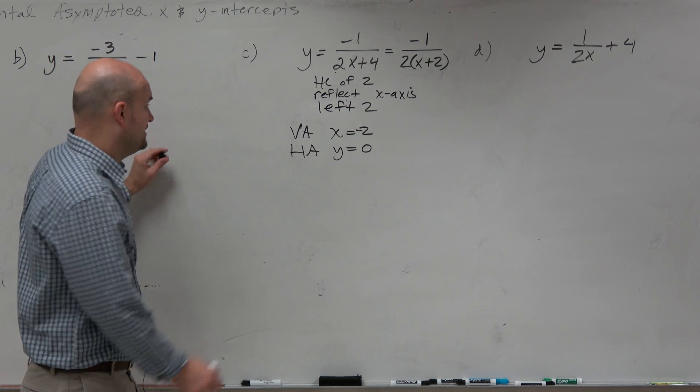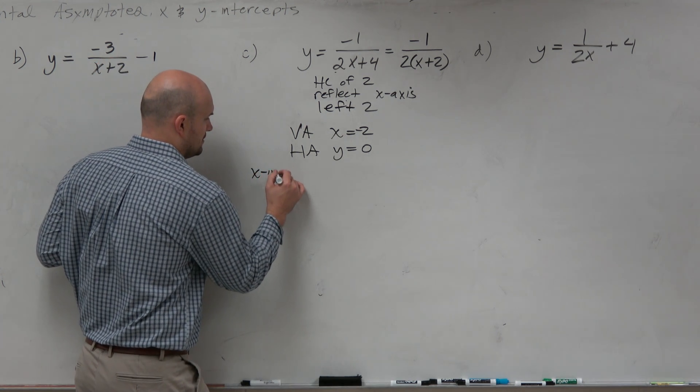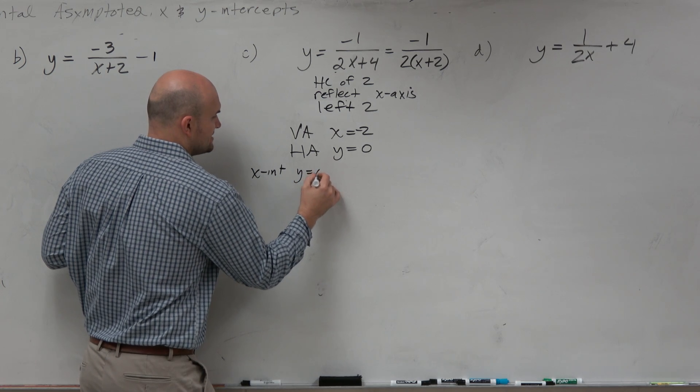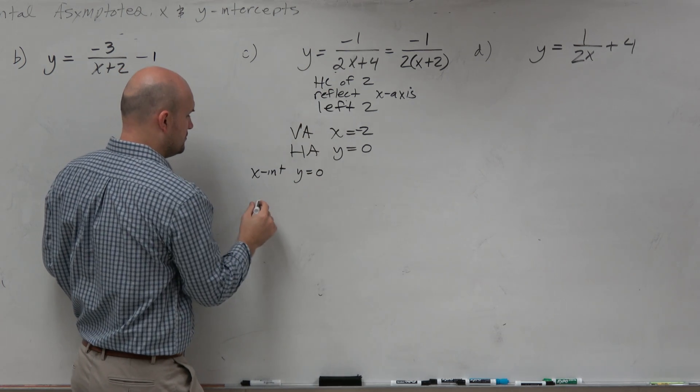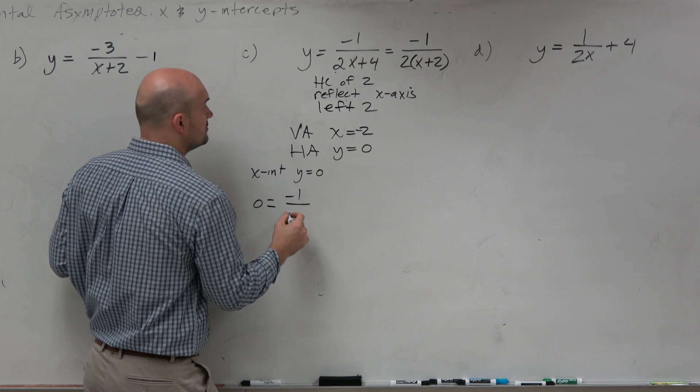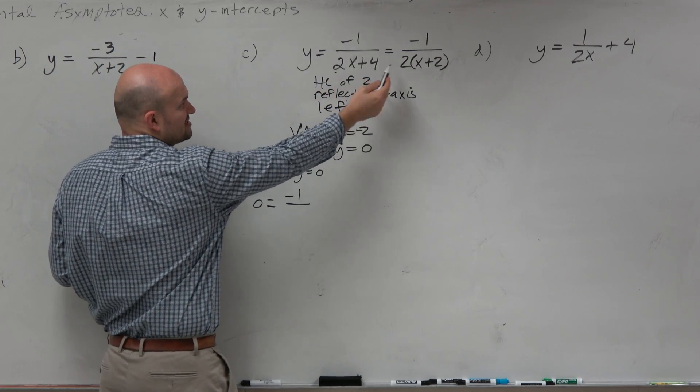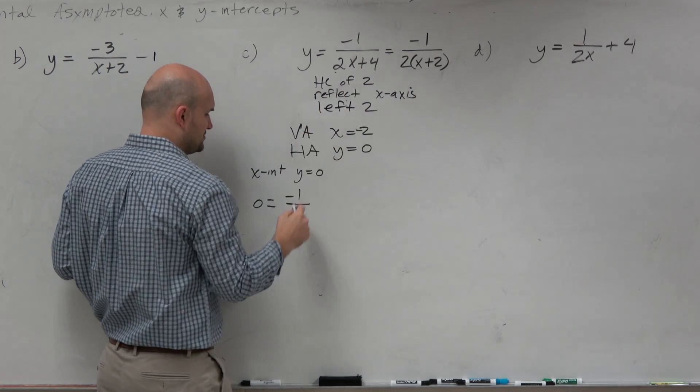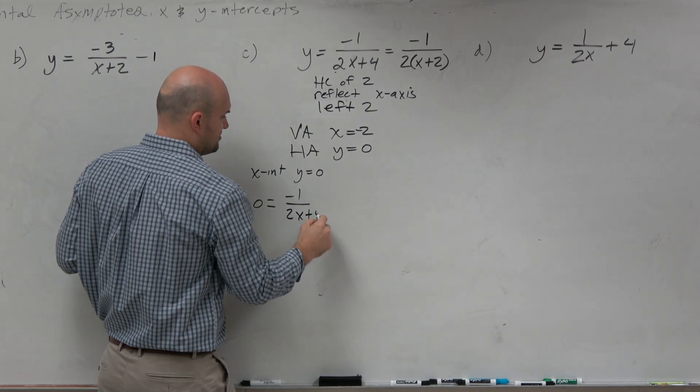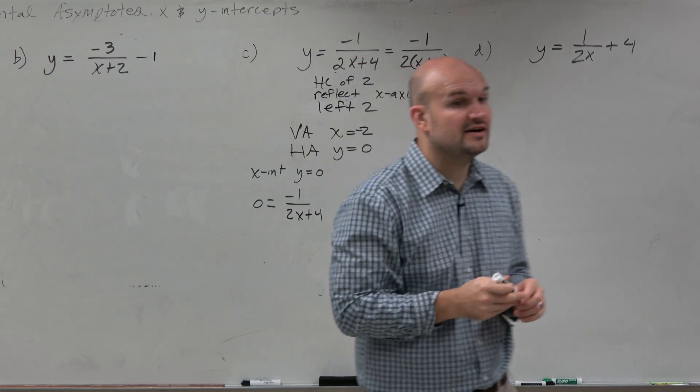And the next one is to find the x-intercept. We're going to set y equal to 0. So I'm going to replace y with 0 and write negative 1 over, now let's go, it doesn't matter which one we use, but I'll just use this form, 2x plus 4. OK, now this is very, very important